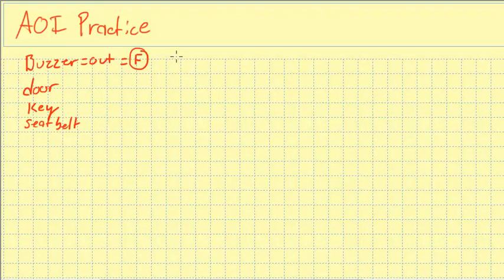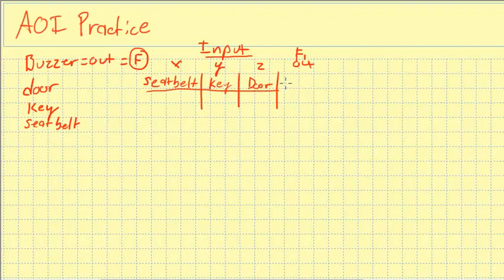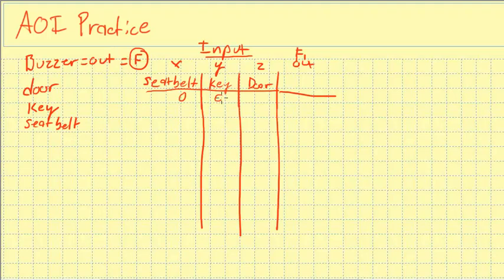Our truth table is set up a little differently because we have three inputs: seat belt, key, and door. We can call these X, Y, and Z. Our output is the function F. We don't necessarily know what the output will be yet, so we'll leave that blank. No matter what, we always have the same groups of combinations. The Z column alternates 0, 1, 0, 1, 0, 1, 0, 1.